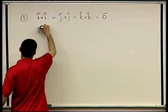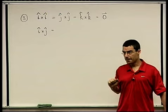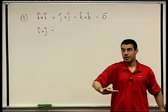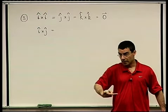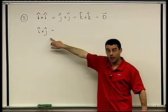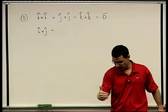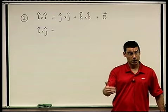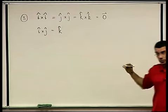What is i cross j? They're both of length one and the angle is 90 degrees, sine of which is one, so the length is one. Using the right-hand rule — here's i, here's j — the thumb points exactly in the k direction. So i cross j equals k, the unit vector in the positive z-axis direction.